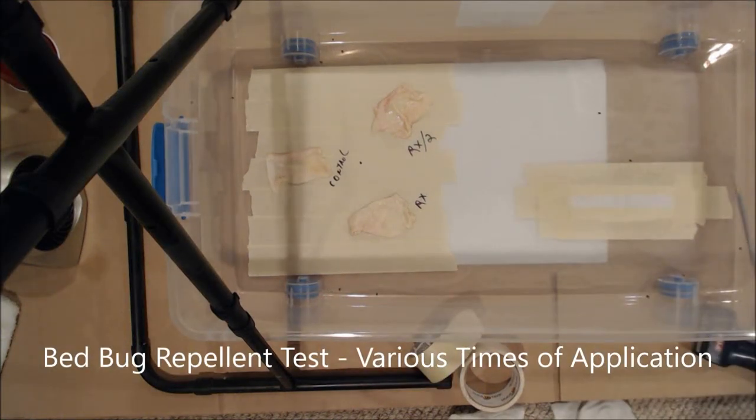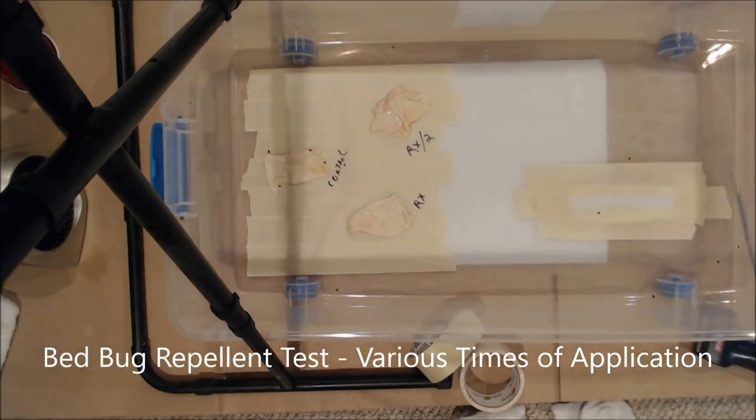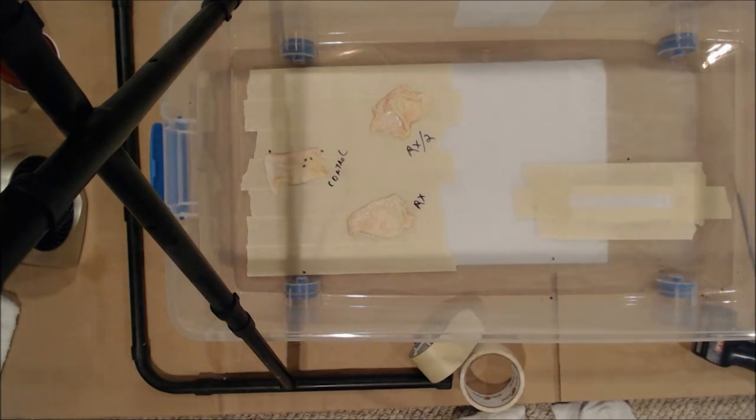Here's another one of our tests that we did with more chicken skins. The control there to the left, where all the bugs seem to be going after, that's the one that actually doesn't have any repellent on whatsoever. RX there on the bottom had it recently applied.